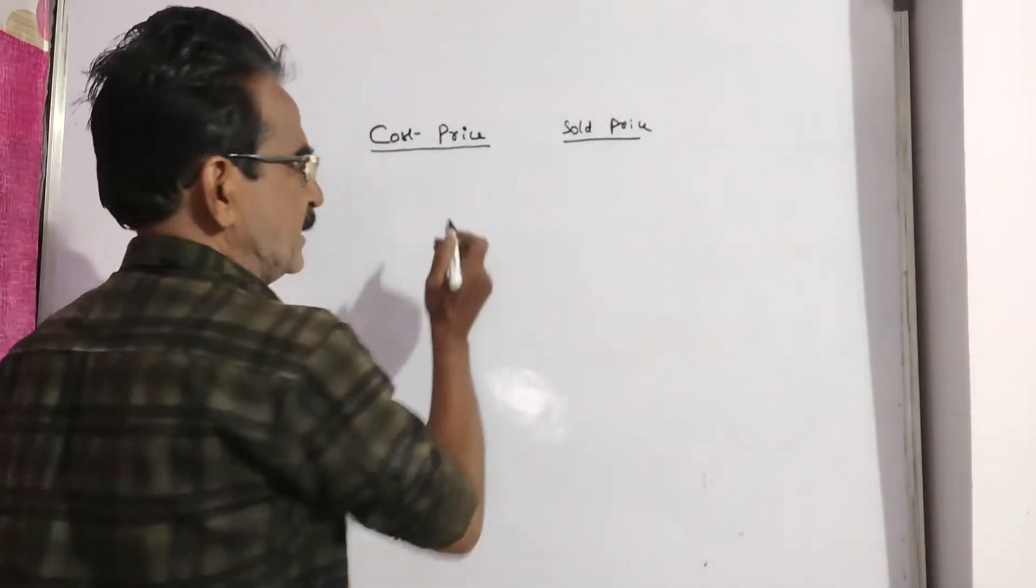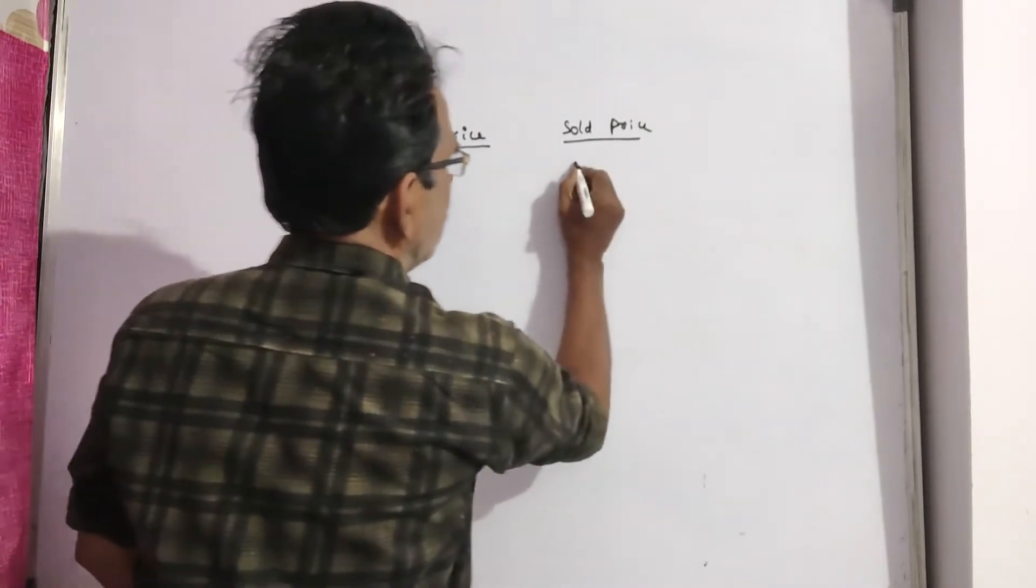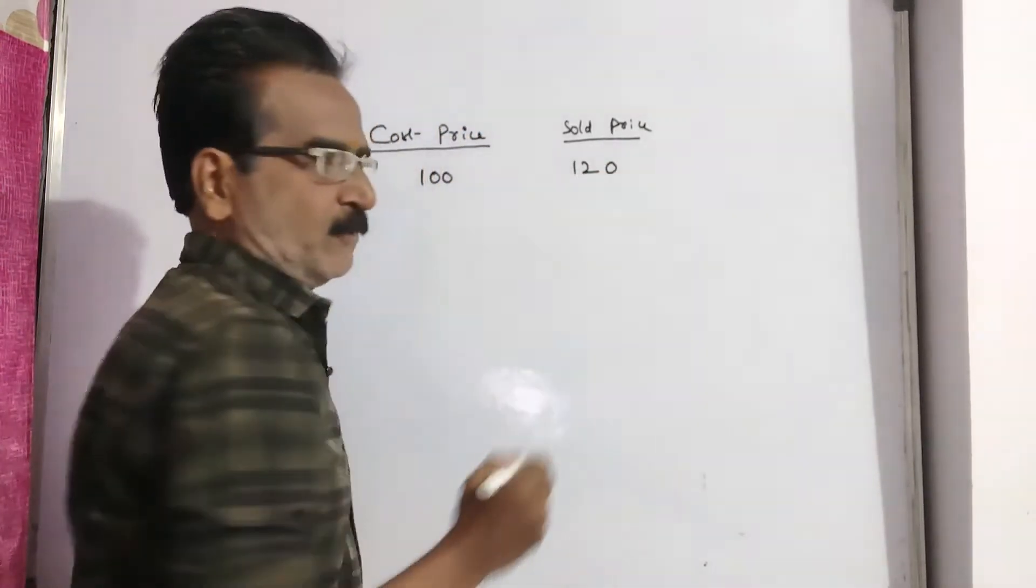See friends, Pooja wants to sell a watch at 20% profit. That means if cost price is 100, the sold price is 120 rupees.